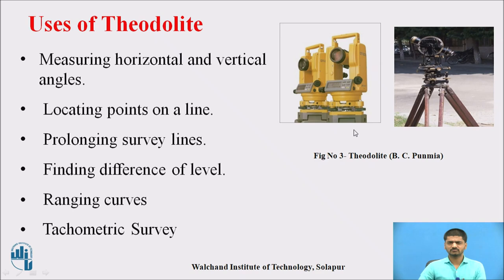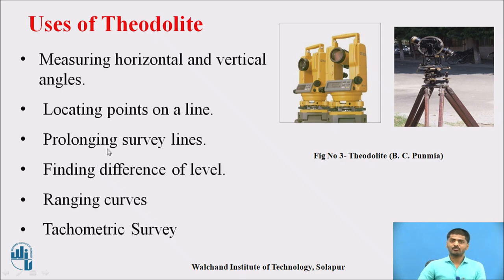Two main uses of theodolite: first, measuring horizontal and vertical angles. For digital theodolite, you require input data and fix the horizontal and vertical vernier readings; the vertical and horizontal discs are used to identify the angles. Second, locating points on a line. Third, prolonging survey lines for route survey work, canal work, and railway track preparation. Fourth, finding the difference of levels.